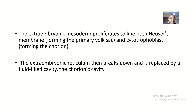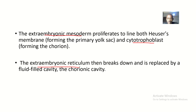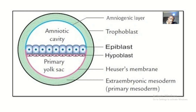The extra embryonic mesoderm proliferates to line both the Heuser's membrane that is forming the primary yolk sac, and it also lines the cytotrophoblast which is forming the chorion. The extra embryonic reticulum then breaks down and is replaced by a fluid-filled cavity — that's the chorionic cavity.